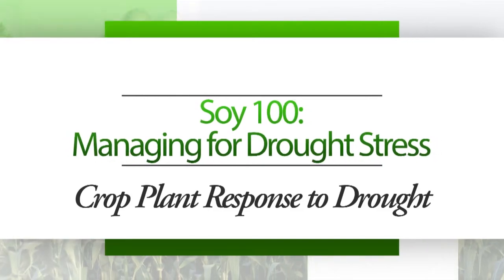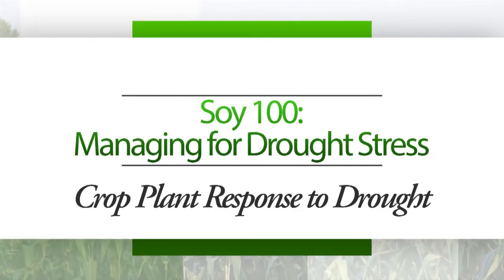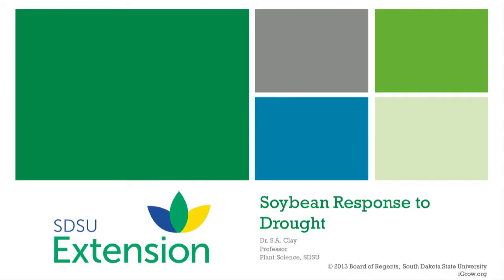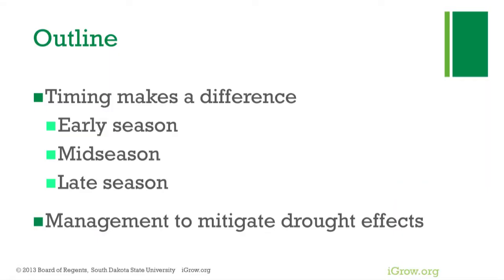I'm going to talk very briefly about soybean response to drought. In the outline: timing makes a difference — whether we have early season, midseason, or late season drought — and then we'll talk about management to mitigate drought effects.